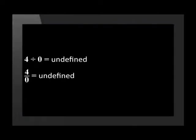Let us begin with restrictions of the denominator. Do you remember that we are not able to divide by 0? We cannot say 4 divided by 0 — we say that the expression is undefined. If we were to write this as a fraction we would say 4 over 0. From this we can create a rule: the denominator of a fraction is not allowed to have a value of 0.